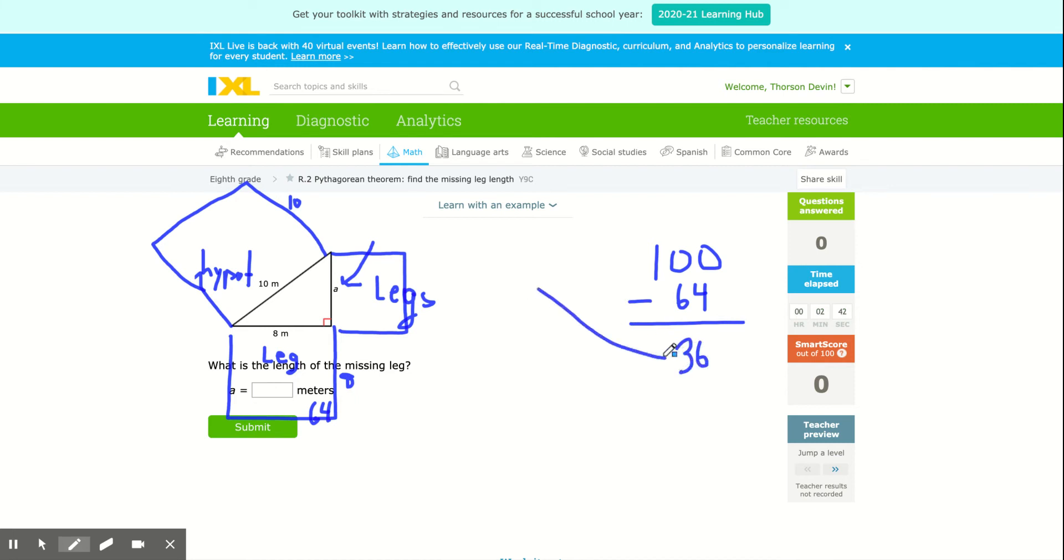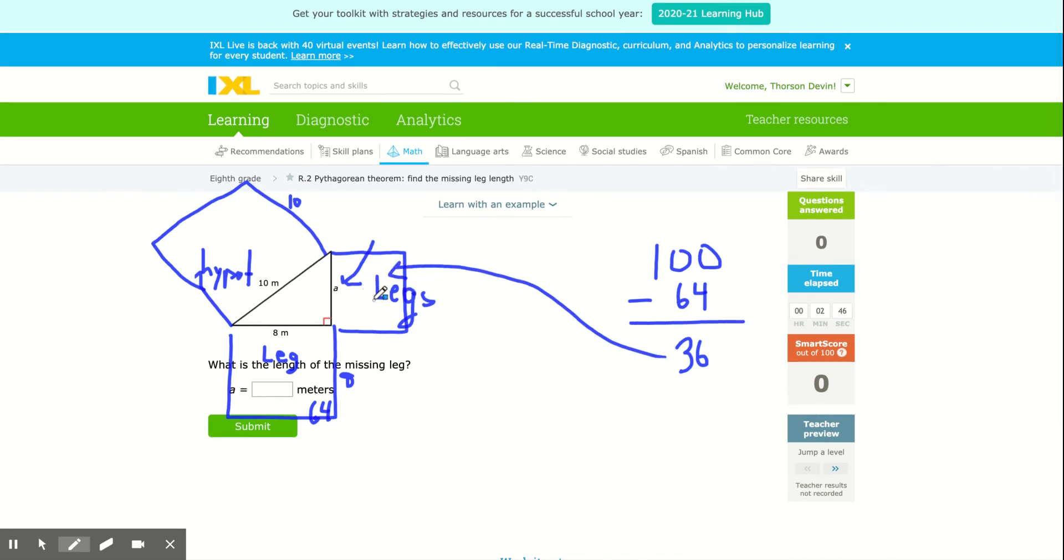That 36 is now going to be the area of that missing square. Now if it's the area, then again, what I'm going to do is square root 36 to find out that the side length is 6, which means that side length is 6. 6 times 6 is 36. So the length of that missing side is 6.